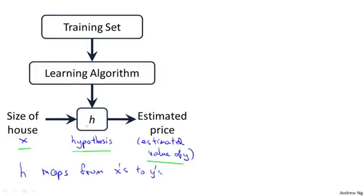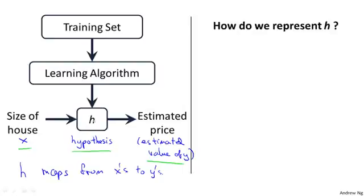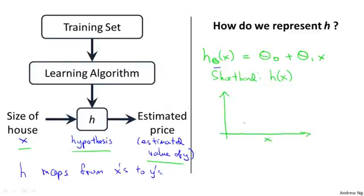When designing a learning algorithm, the next thing we need to decide is, how do we represent this hypothesis h? For this and the next few videos, I'm going to choose our initial choice for representing the hypothesis will be the following. I'm going to represent h as follows. We'll write this h_θ(x) = θ_0 + θ_1 * x. And as a shorthand, sometimes instead of writing h subscript θ of x, sometimes as a shorthand, I'll just write this h(x). But more often, I'll write it as a subscript θ over there. And plotting this in pictures, all this means is that we are going to predict that y is a linear function of x. So that's a dataset. And what this function is doing is just predicting that y is some straight line function of x equals θ_0 + θ_1 * x.